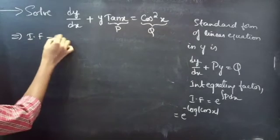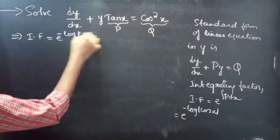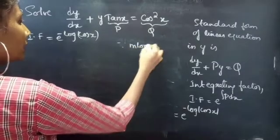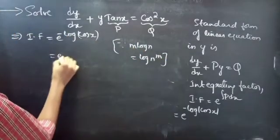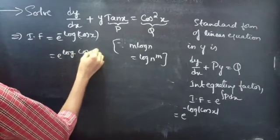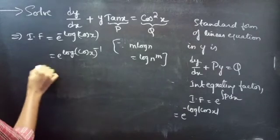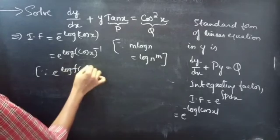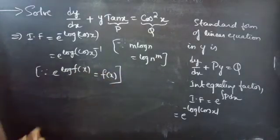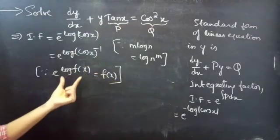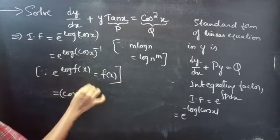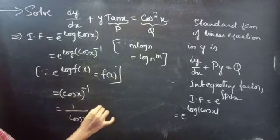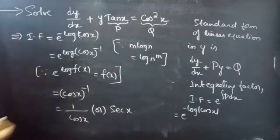Then the integrating factor becomes e to the power minus log cos x. Since m log n can be written as log n to the power m, we can write minus log cos x as log cos x to the power minus 1, that is e to the power log cos x to the power minus 1. Since e to the power log of a function equals that function, this gives us cos x to the power minus 1.